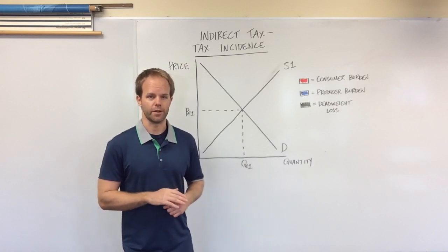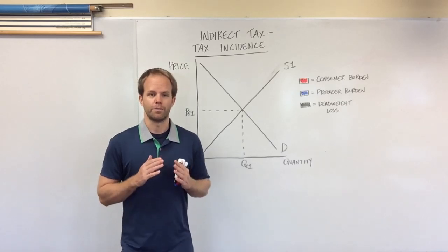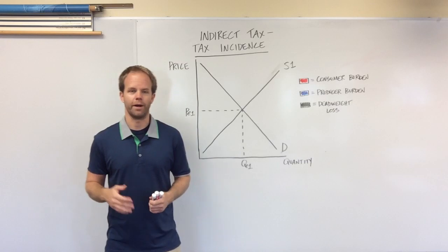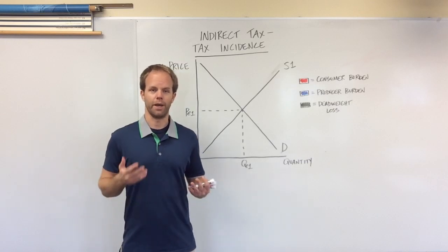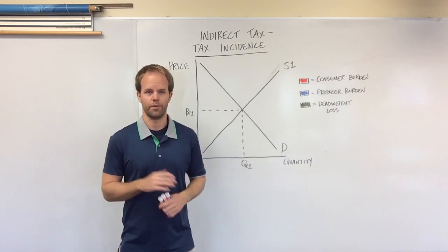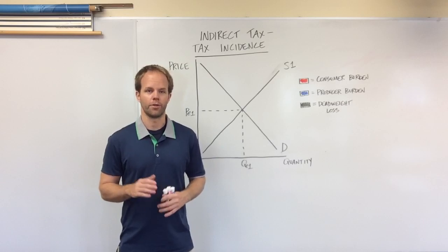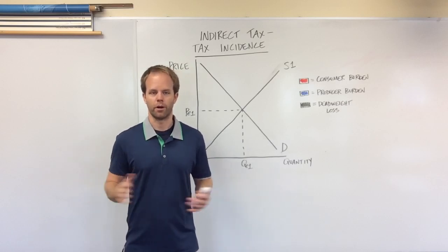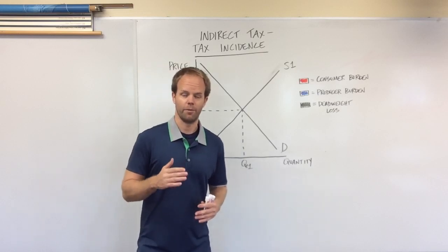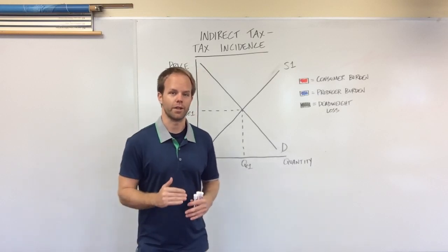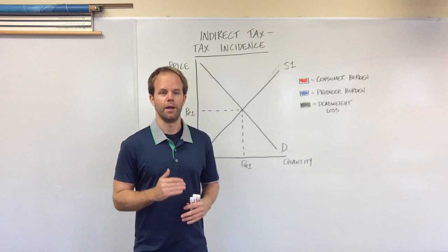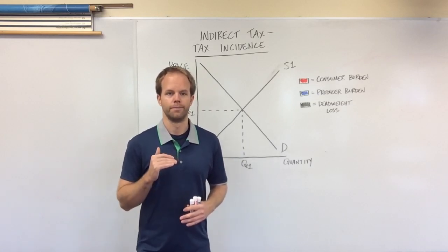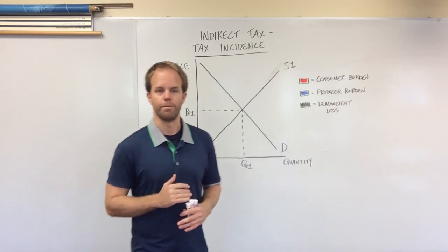There are two types of indirect taxes. There is a specific tax, which is a set amount. So if you're going to go buy a carton of cigarettes, you'll pay $2 per pack. That is a specific tax — it's a set amount. Regardless of how many packages of cigarettes you buy, you will pay that amount per unit bought.